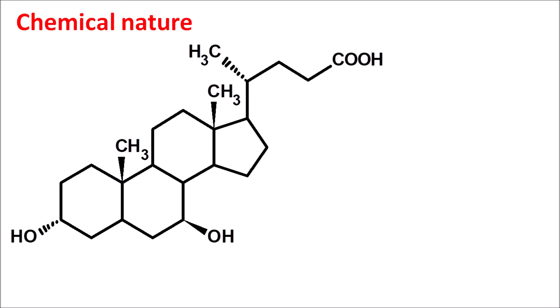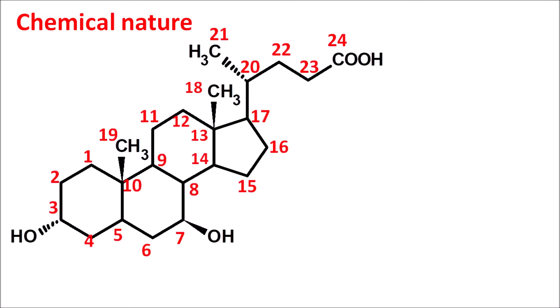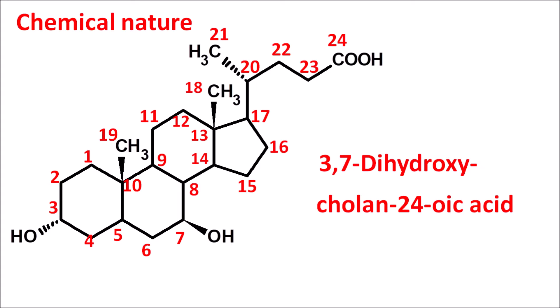Regarding the chemical nature, ursodeoxycholic acid has a steroidal nucleus with 24 carbons, making it a cholanic acid derivative. The carboxylic acid is present at the 24th position, so the suffix is cholane-24-oic acid — that is why these are called colic acids. Ursodeoxycholic acid has hydroxyl groups at the 3rd and 7th positions, making it a 3,7-dihydroxycholan-24-oic acid derivative.